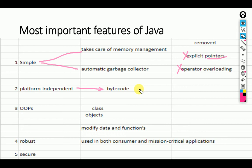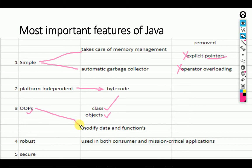The third feature is the OOP concept. Java is a purely object-oriented programming language. It has many classes, object creation features, and extraordinary features like inheritance, polymorphism, and data abstraction. Because of data modification — we can modify any kind of data and functions — Java is a purely object-oriented programming language.